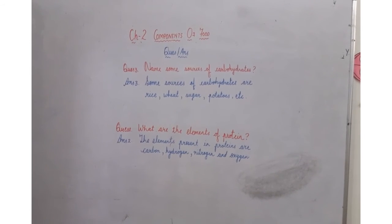Question number two is what are the elements of protein? Answer two. The elements present in proteins are carbon, hydrogen, nitrogen and oxygen.